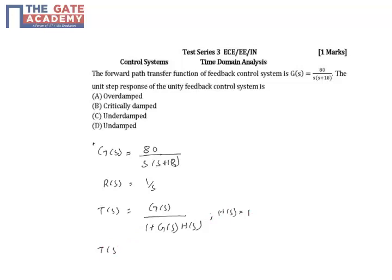T(s) will be 80 by s square plus 18s plus 80. This comes after simplification of this particular formula.